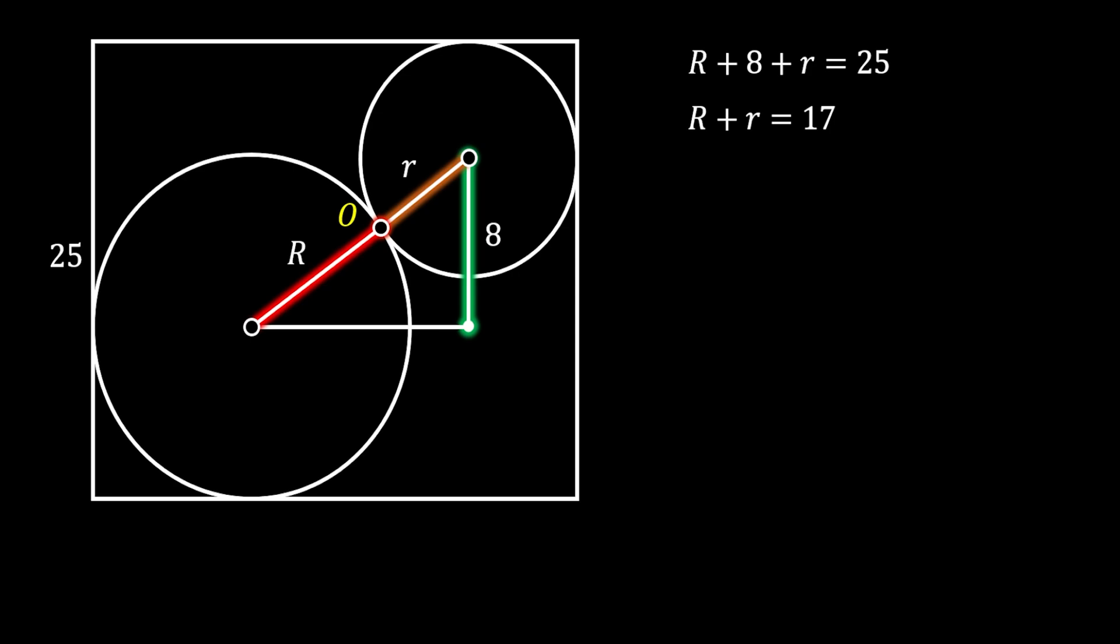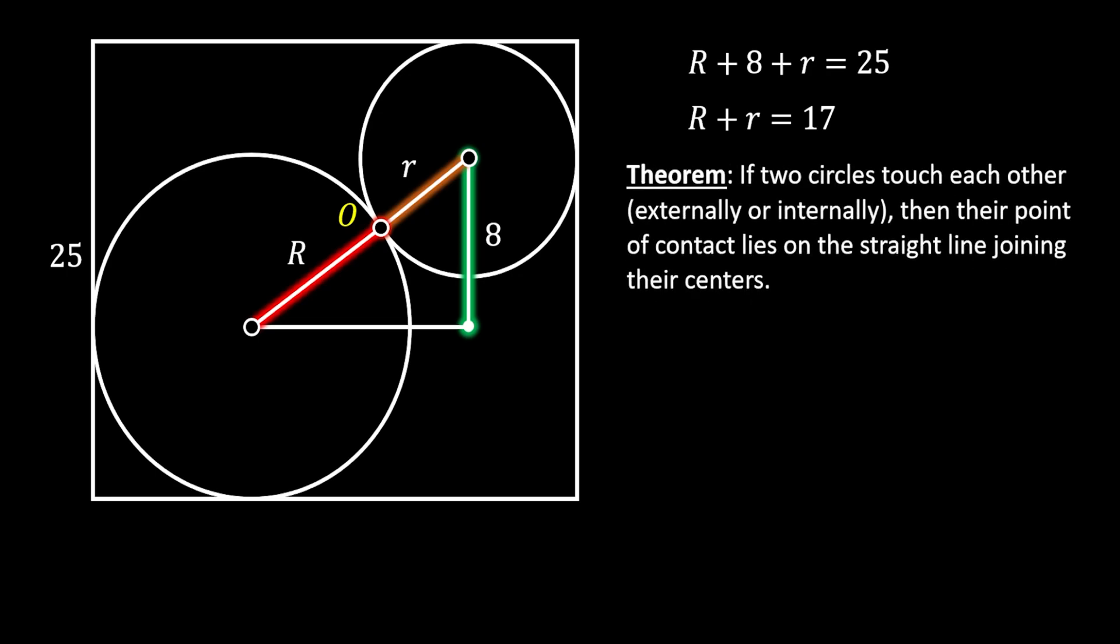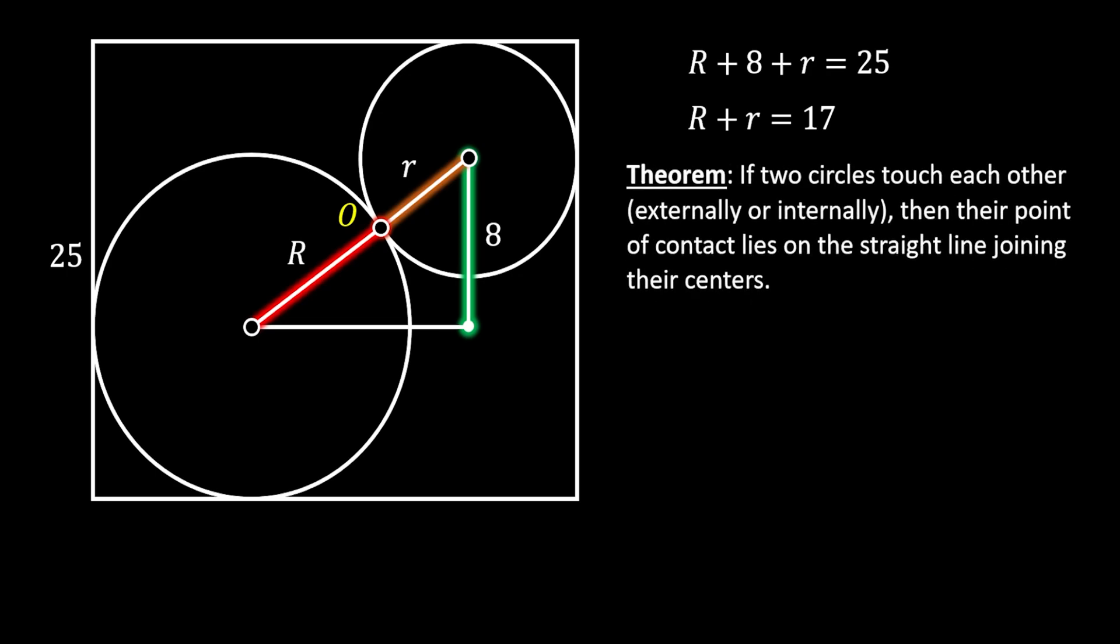But, how do we know that this is actually a straight line? Well, the theorem of the circle states that if two circles touch each other externally or internally, then their point of contact lies on the straight line joining their centers. As you can see, this is exactly our case, so therefore, the line between two centers of our circles must be a straight line.